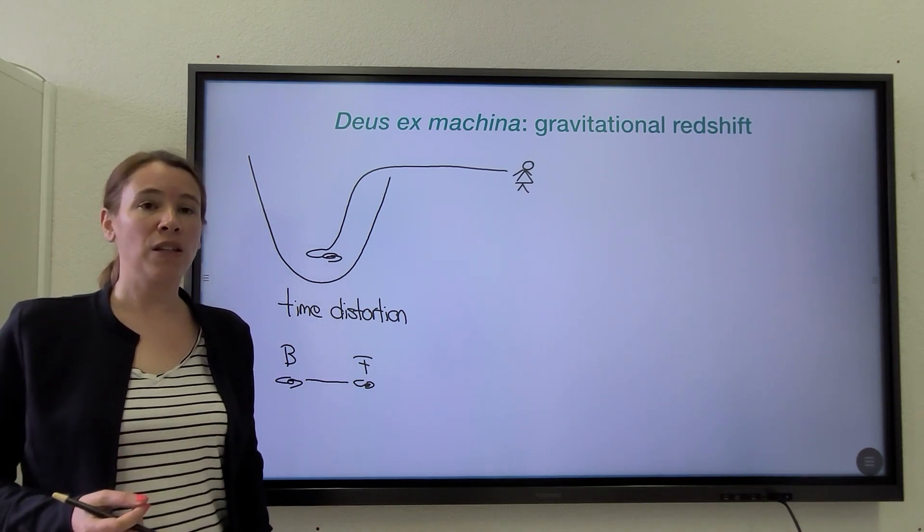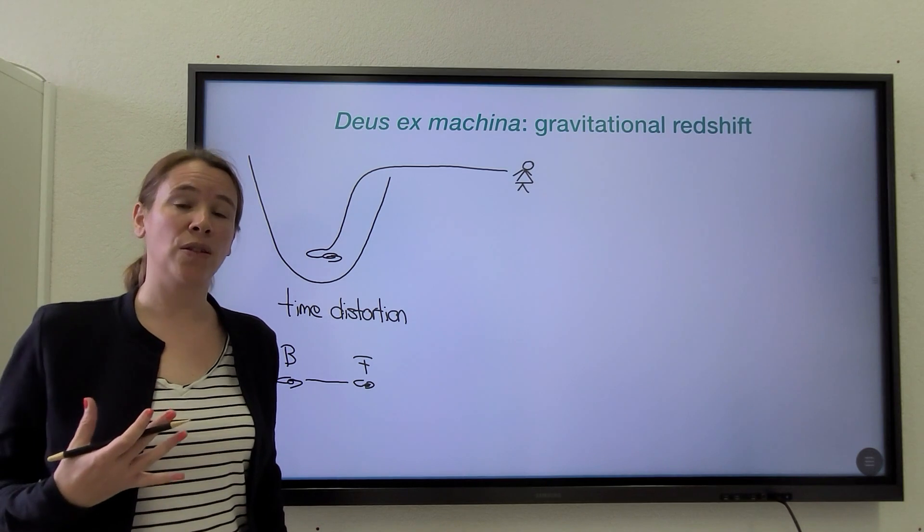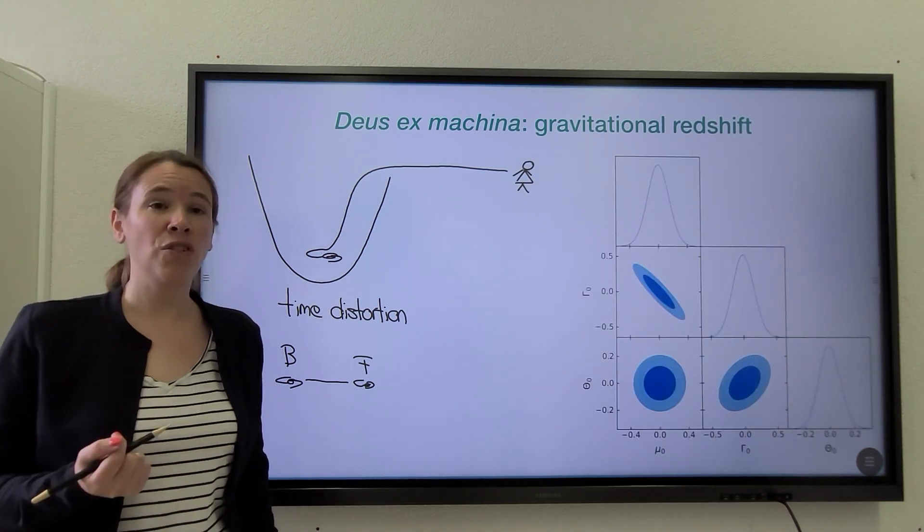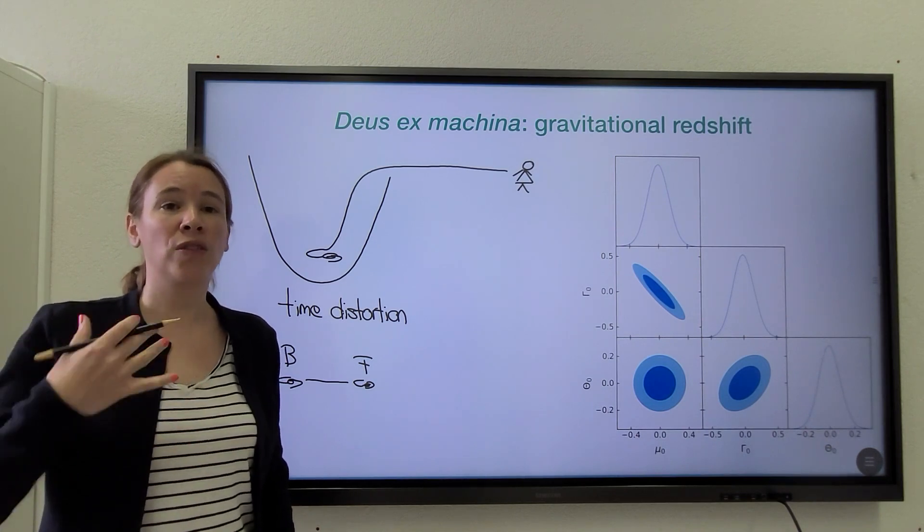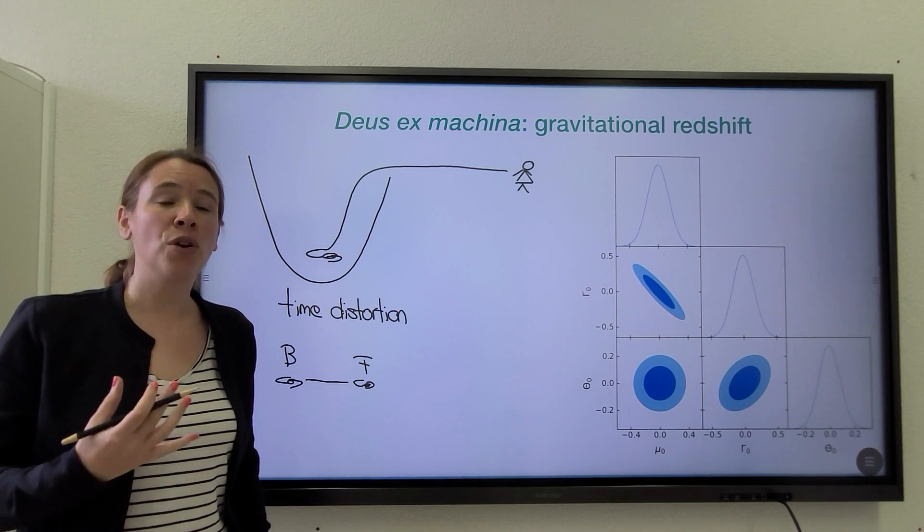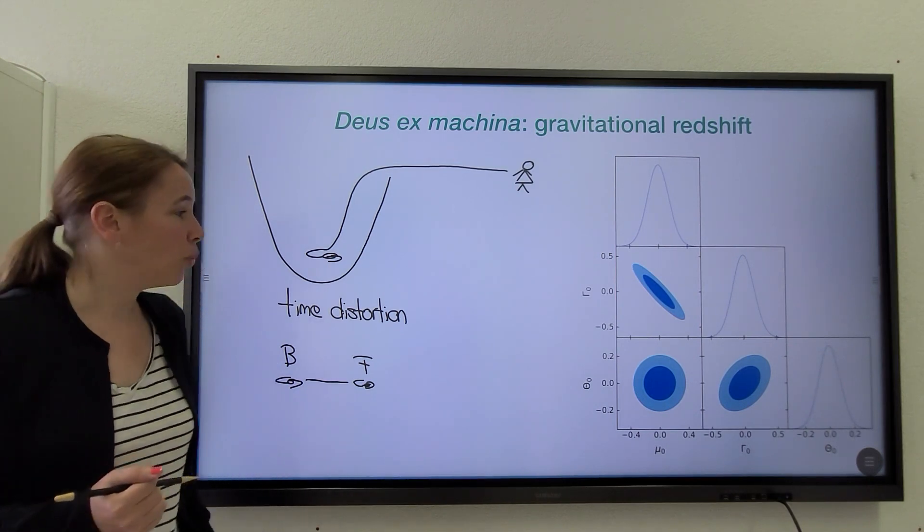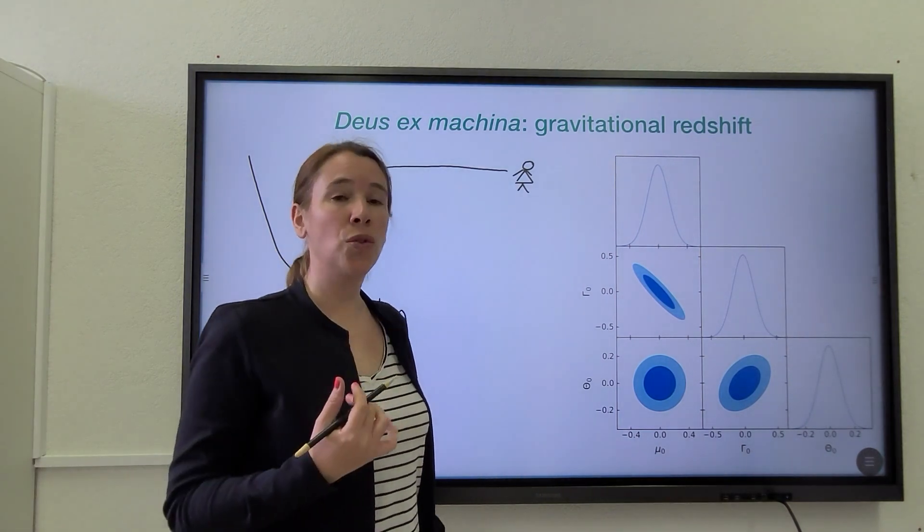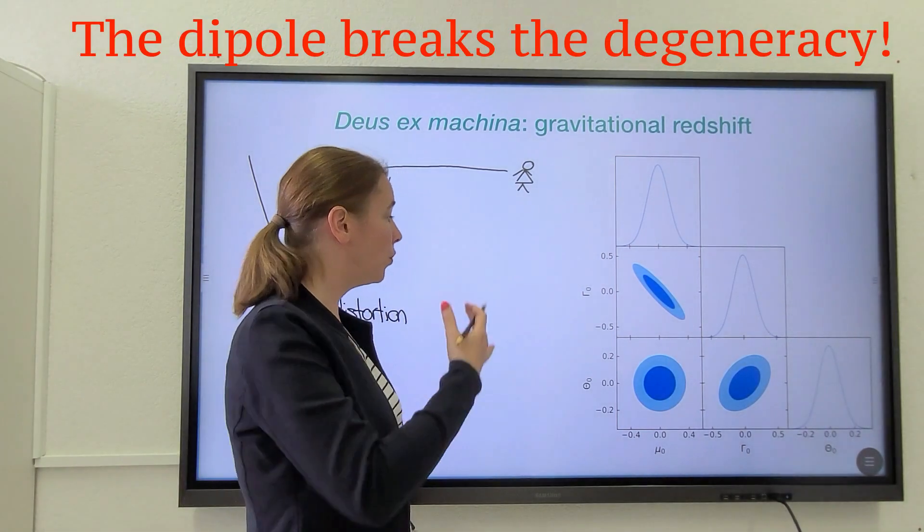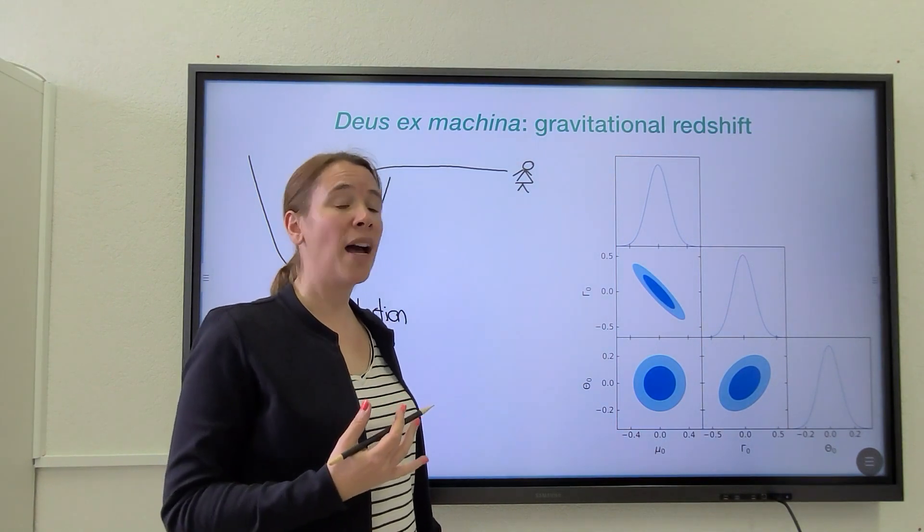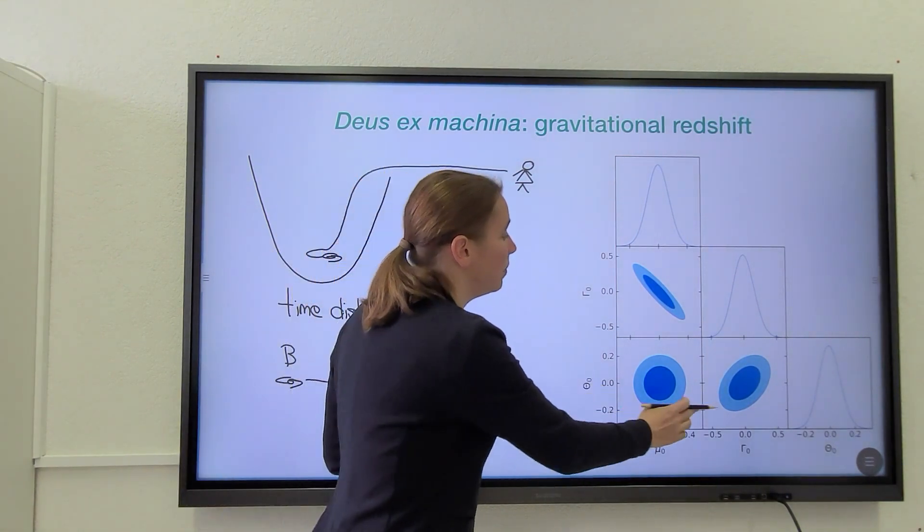So what we did in our work is to study how the constraints on this modified gravity parameter change if on top of the standard redshift-space distortion multipoles, we add a measurement of this dipole. And we found, as can be seen on this plot here, that thanks to the dipole, we can break the degeneracy between the three parameters and we recover tight constraints on the three parameters individually.